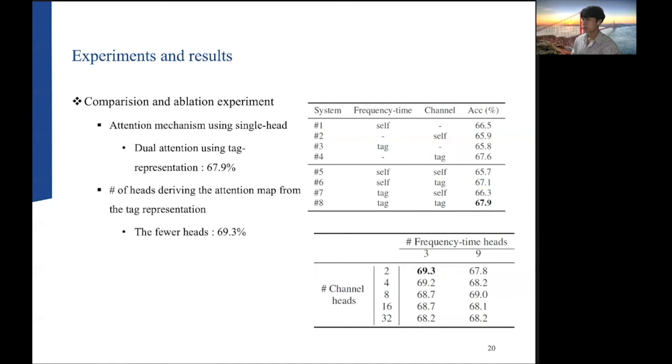The table on the bottom describes comparison experiments of the number of multi-head when deriving the attention map from the tag representation. The smaller the number of heads in the channel and frequency-time dimension, the better the performance.